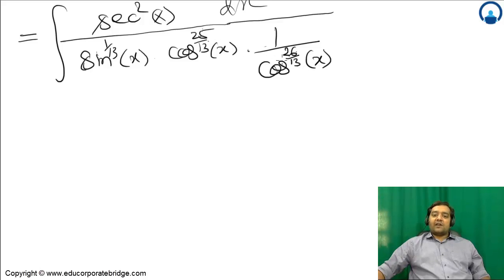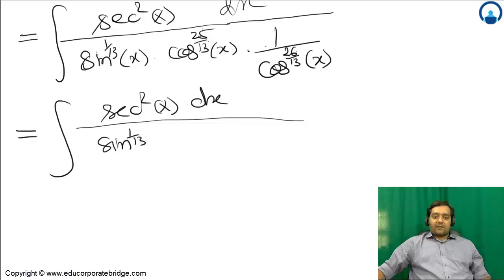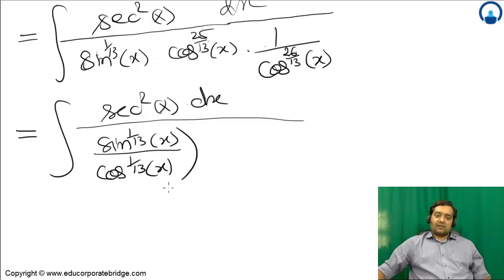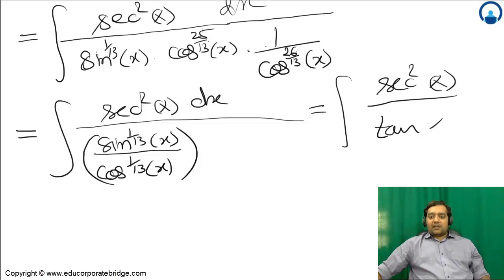After cancellation, 1/13 remains. Finally, you get sec²(x) dx divided by sin(x) raised to power (1/13) and cos(x) raised to power (1/13), which equals integral of sec²(x) divided by tan(x)^(1/13) dx.